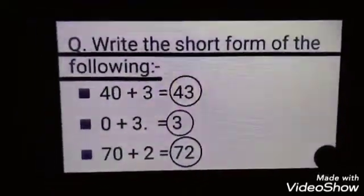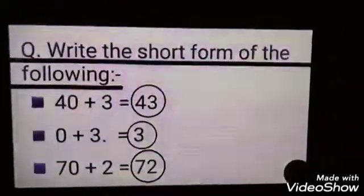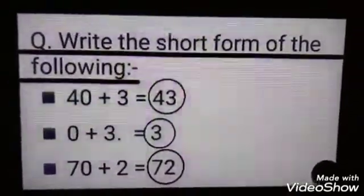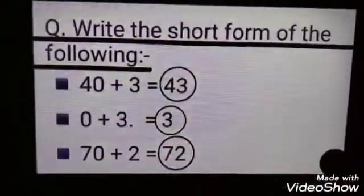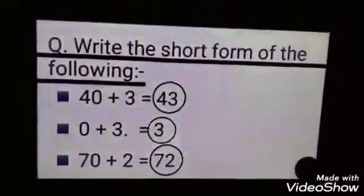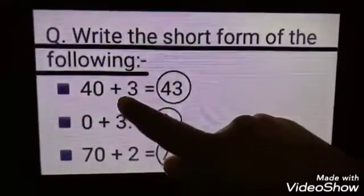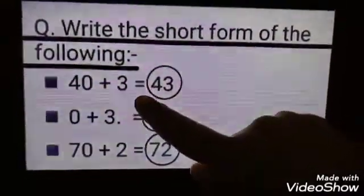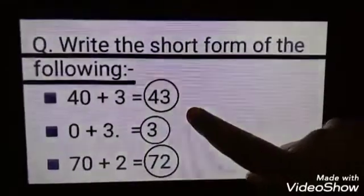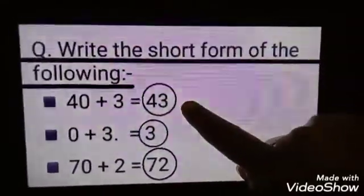Now write the short form of the following: 40 plus 3 equals 43. 4 is at tens place and 3 is at ones place, so we will write 43.